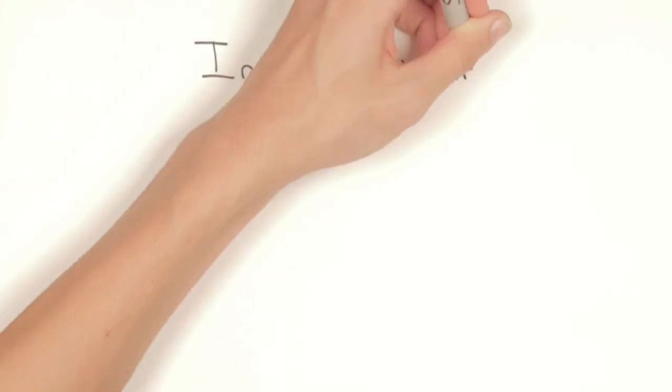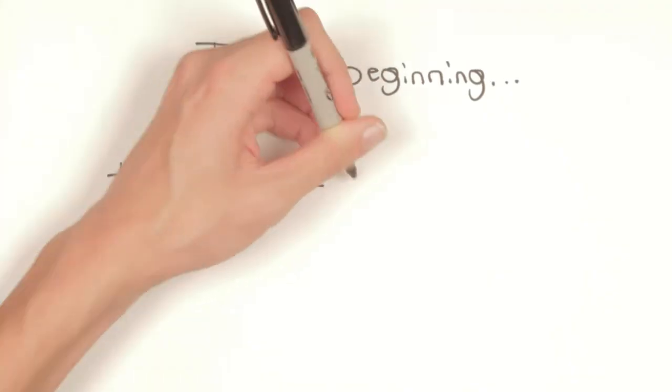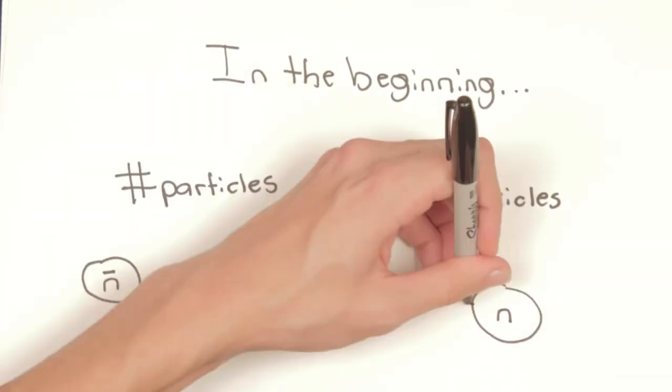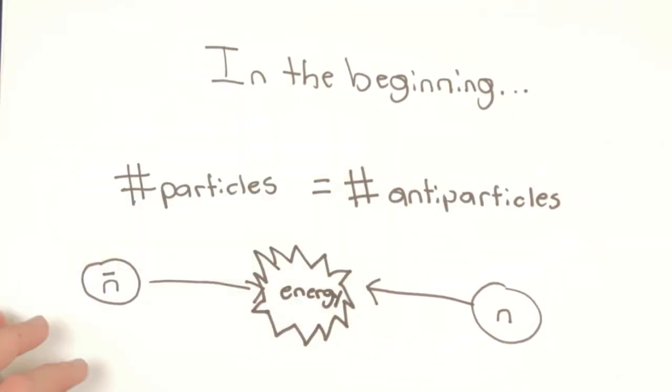Scientists hypothesized that at the very beginning of the universe, during the Big Bang, there was an equal amount of matter and antimatter. Trillions upon trillions of particles and antiparticles collided, releasing a massive amount of energy.